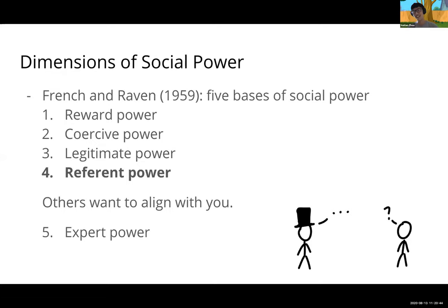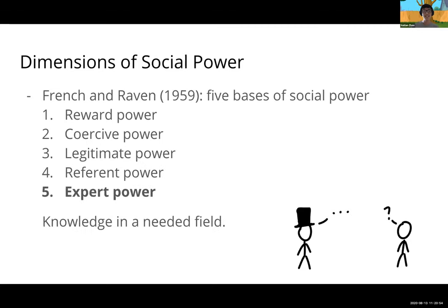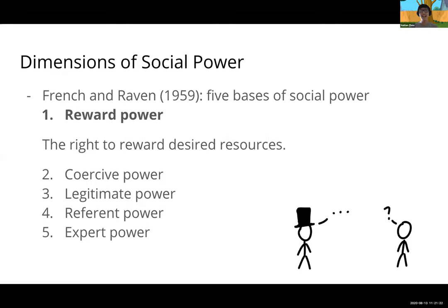Fifth, expert power: knowledge in the needed field — John knows a lot about NLP and research, so if he tells me something in a meeting I'm inclined to believe him. So five dimensions of social power, as exemplified by my internship summer. On the other hand, I can also have reward power: John wants results and I have control over whether he gets those results, so in that respect I also hold some of the power.